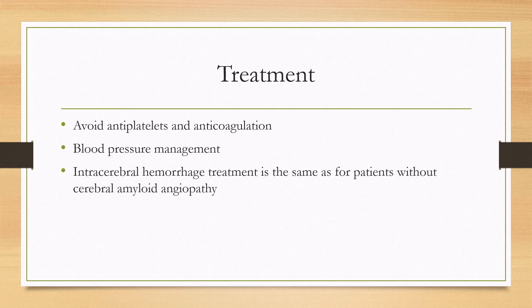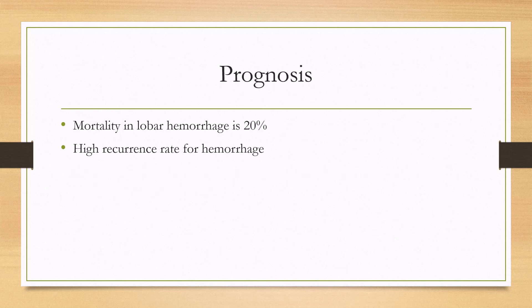If someone does get a hemorrhage, the treatment is the same for those with and without cerebral amyloid angiopathy. In terms of prognosis, mortality in lobar hemorrhages is pretty high, ranging from 10 to 30 percent. The recurrence rate is also pretty high once you've already had a lobar hemorrhage.